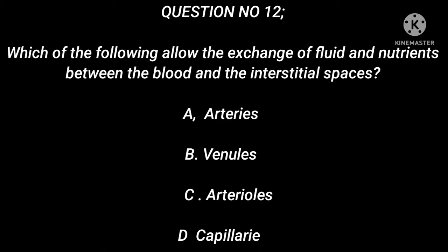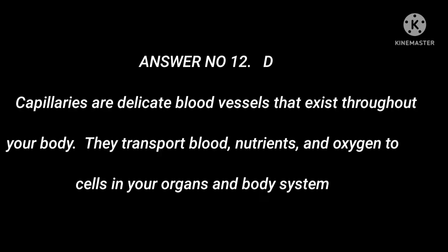Question number 12: Which of the following allows the exchange of fluid and nutrients between the blood and the interstitial spaces? A. Arteries. B. Venules. C. Arterioles. D. Capillaries. Answer number 12: D. Capillaries are delicate blood vessels that exist throughout your body. They transport blood, nutrients, and oxygen to cells in your organs and body systems.